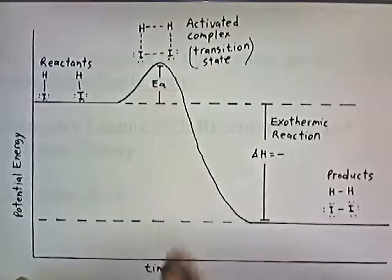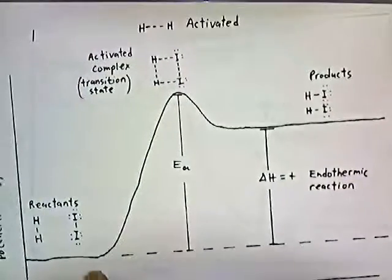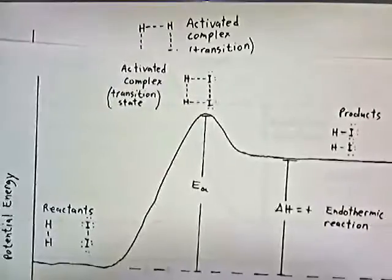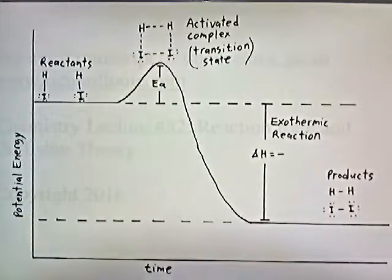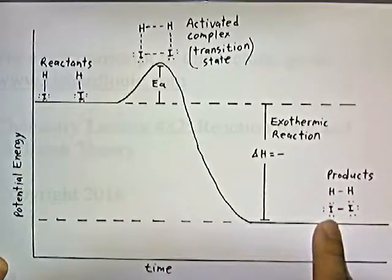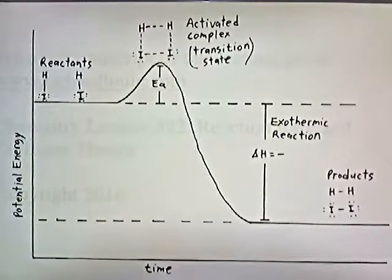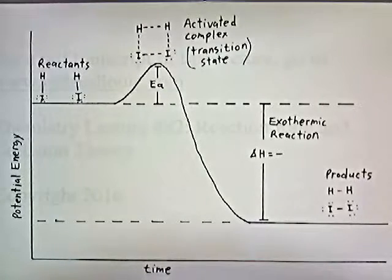Notice that E sub A, or the activation energy, is smaller in the reverse reaction. In the forward reaction, the activation energy went from the starting level all the way up to the peak — it took a lot of energy. But in the reverse reaction, it's only from the starting level to the peak, which is a smaller gap, so it takes less energy to push the molecules together and break the bonds. Also notice that the potential energy starts high but ends low — the energy released in the reaction is greater than the energy absorbed, so this is an exothermic reaction. Delta H is negative for an exothermic reaction, and since the reaction releases energy, the vessel that contains the reaction will become warm.